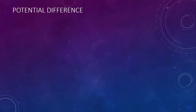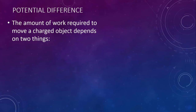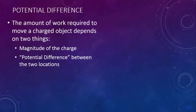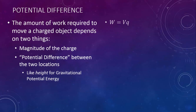This brings us to the concept of potential difference. The amount of work required to move a charged object depends on two things: the magnitude of the charge itself, because that will affect the amount of force it feels, and what we call the potential difference between the two locations. This is kind of like height for gravitational potential energy. The equation for the work done on an object in an electric field is W equals V times Q, where W stands for work, V stands for potential difference — we use V because this is also called voltage — and Q stands for charge. On your reference table, it's written as V equals W over Q.